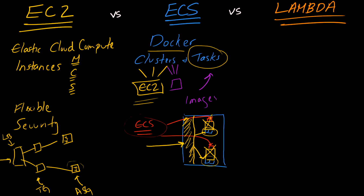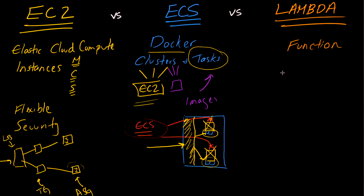Lambda functions are slightly different because they abstract a lot of the complexity you see in ECS and EC2, at the sacrifice of control. With Lambda, you operate at the function level — there are no containers and no concept of infrastructure. You don't need to worry about creating or managing infrastructure, Docker containers, EC2 instances, security, or any of that complexity. You essentially just upload some code to the Lambda function console.